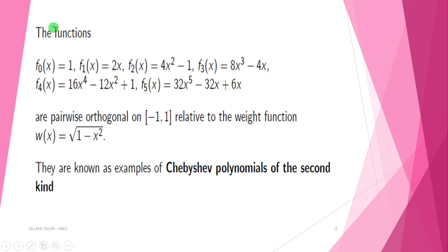The functions φ₀(x) = 1, φ₁(x) = 2x, φ₂(x) = 4x² - 1, φ₃(x) = 8x³ - 4x, φ₄(x) = 16x⁴ - 12x² + 1, and φ₅(x) = 32x⁵ - 32x + 6x